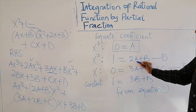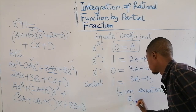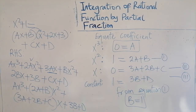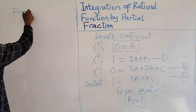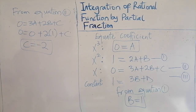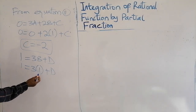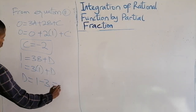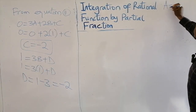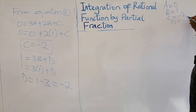From the x-cubed equation, a = 0. Plugging a = 0 into equation 1 gives b = 1. With a = 0 and b = 1, going to equation 2: 0 = 0 plus 2(1) plus c, so c = minus 2. Then from equation 3: 1 = 3(1) plus d, so d = 1 minus 3 = minus 2. So a = 0, b = 1, c = minus 2, d = minus 2.